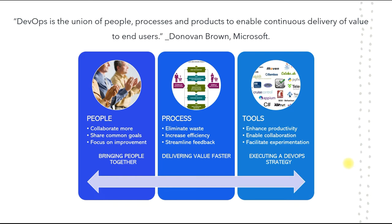As you bring people together, there is definitely a need for a change in processes — how we deliver work from one team to another. This change eliminates waste, increases efficiency, and streamlines feedback. Once work is executed, feedback is given back to the development team; they work on it, it moves to testing, and so on — essentially delivering value, not just the product. You also need a good set of tools to execute the DevOps strategy. DevOps is the union of people, processes, and products to enable continuous delivery of value to end users. The tools enhance productivity, enable collaboration, facilitate experimentation without wasting time and effort, and streamline feedback.